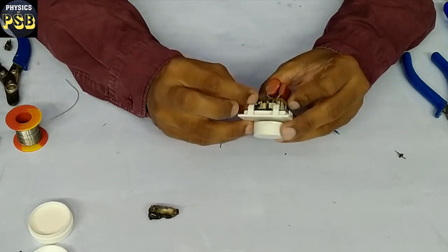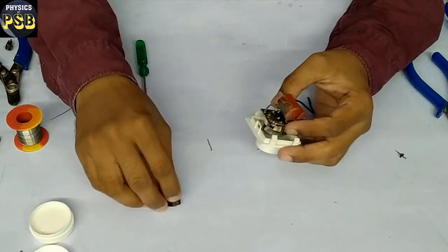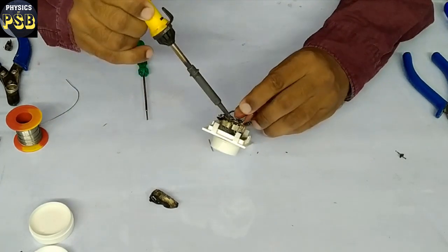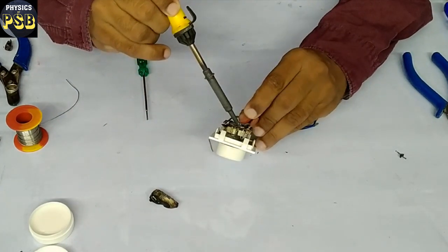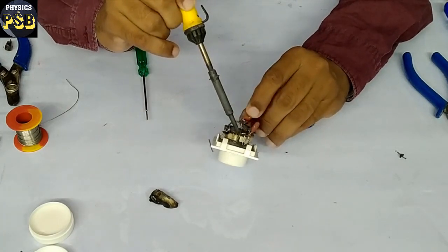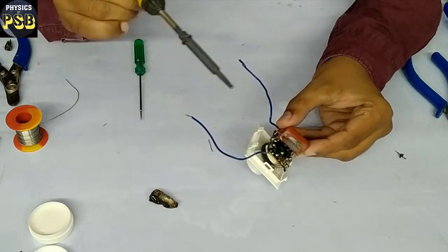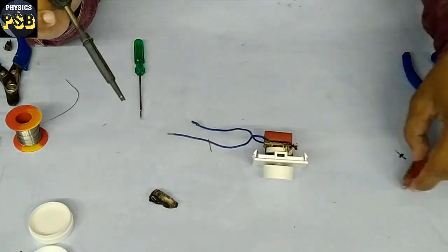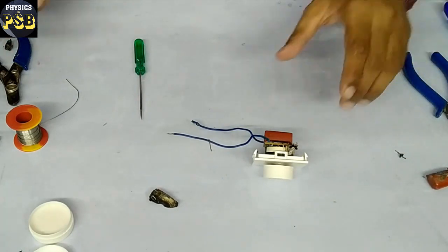I desolder this damaged capacitor. I remove this one as well. Place the hot soldering iron here. When the metal melts it comes off very easily. The same thing I'll do on this side as well. It has come off.